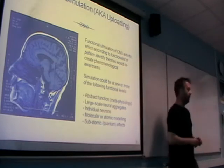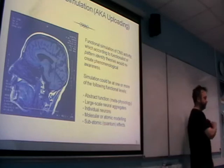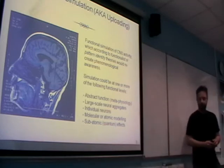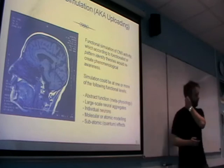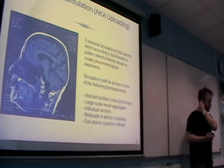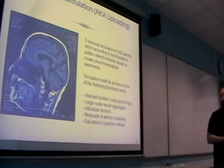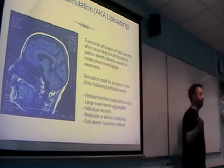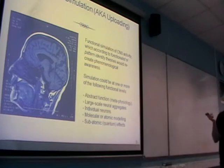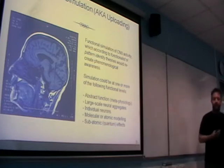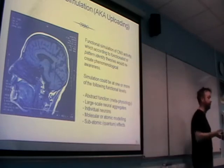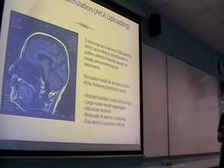The next level, and this is a common one, is where people say we will model the function of every individual neuron, which is no mean feat, given that every neuron could potentially connect up to roughly a thousand other neurons. Probably the best book to read about this - and I know this might be controversial - is The Singularity Is Near by Ray Kurzweil. He's got some good estimates in that.